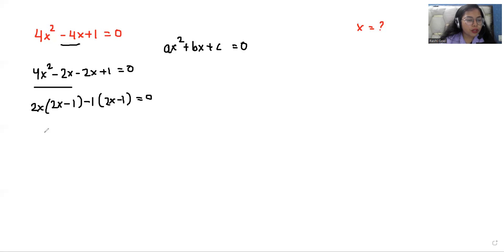Now from both the brackets, I can take 2x - 1 as common. So what is left? 2x - 1 = 0. Now we have two roots.